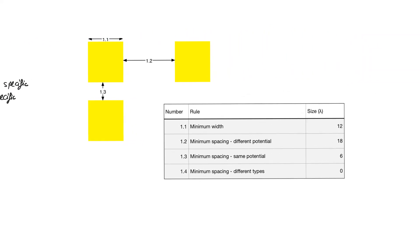Design rules describe things about layers, so we will take them layer by layer. Rules are numbered so that the number consists of X dot Y — X refers to the layer being considered and Y refers to the serial number of the rule. So rule 1.3 is a rule about layer 1, which is the n-well, and it's the third rule to describe the n-well. Everything is stated in terms of lambda, and all drawn dimensions must be in multiples of lambda — we cannot use fractional parts.